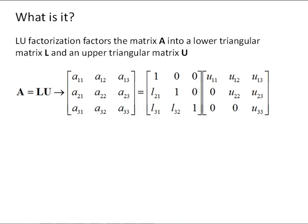So, what is LU factorization? LU factorization factors the matrix A — the coefficient matrix for a linear system — still in that context of a linear system AX equals B. A is factored into a lower triangular matrix L and an upper triangular matrix U.